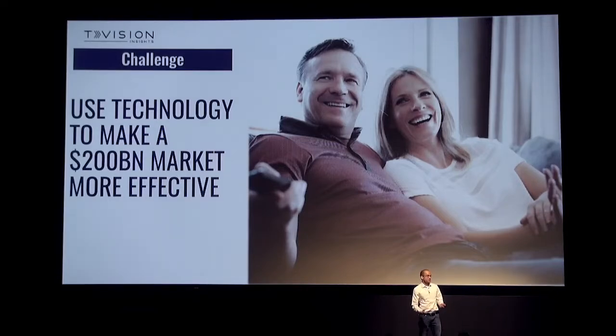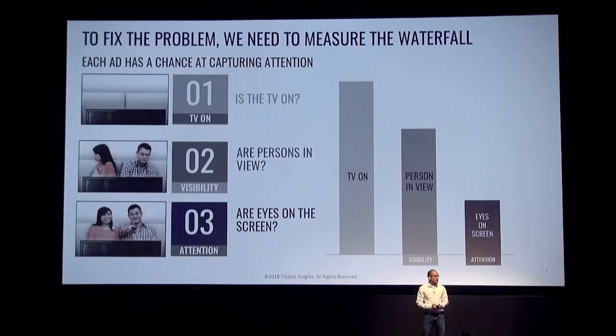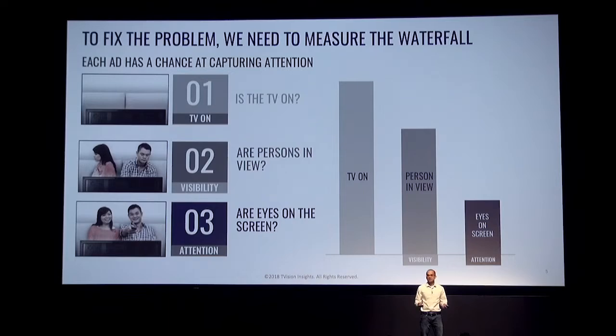T-Vision addresses this by using computer vision to understand what is on the screen, whether people are engaged with the content they're consuming, and who is watching that content. We're using computer vision technology to disrupt this 200-billion-dollar market. We're trying to understand, one, whether someone is being exposed to programs or ads, and two, of the time they are exposed — meaning they are in the room and have the ability to watch — what fraction of that time did they actually engage with it? Those are the key data points we try to get from our audience measurement.